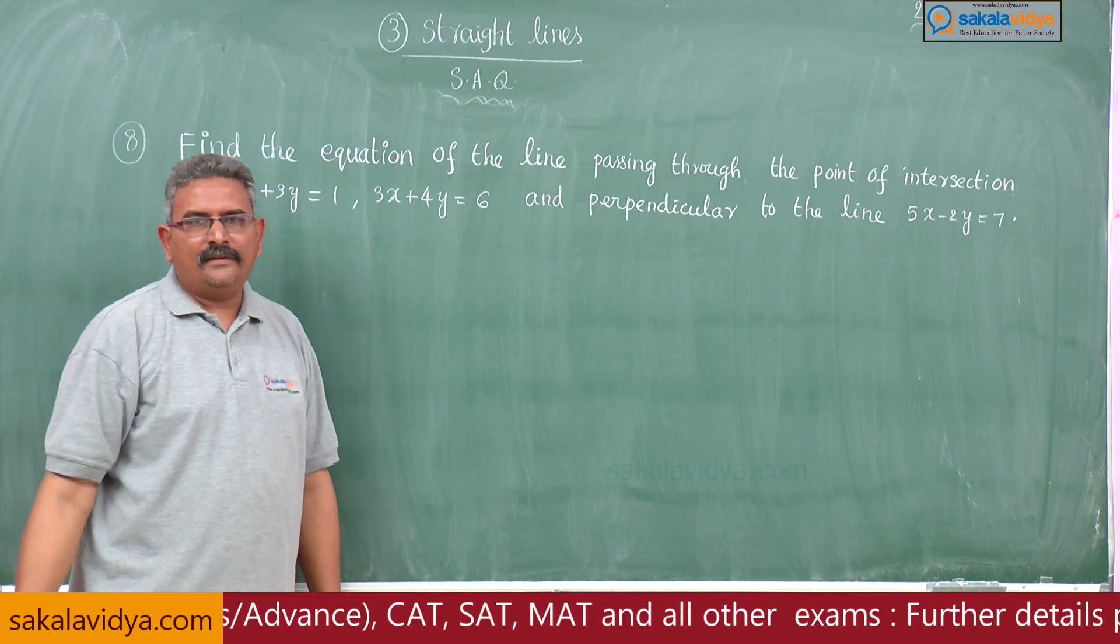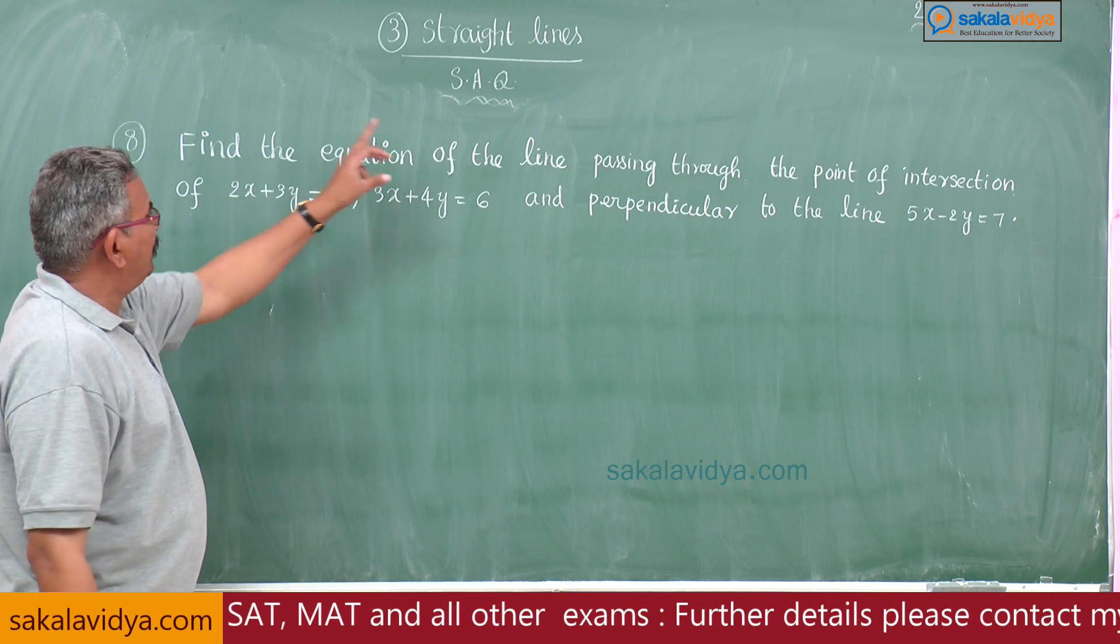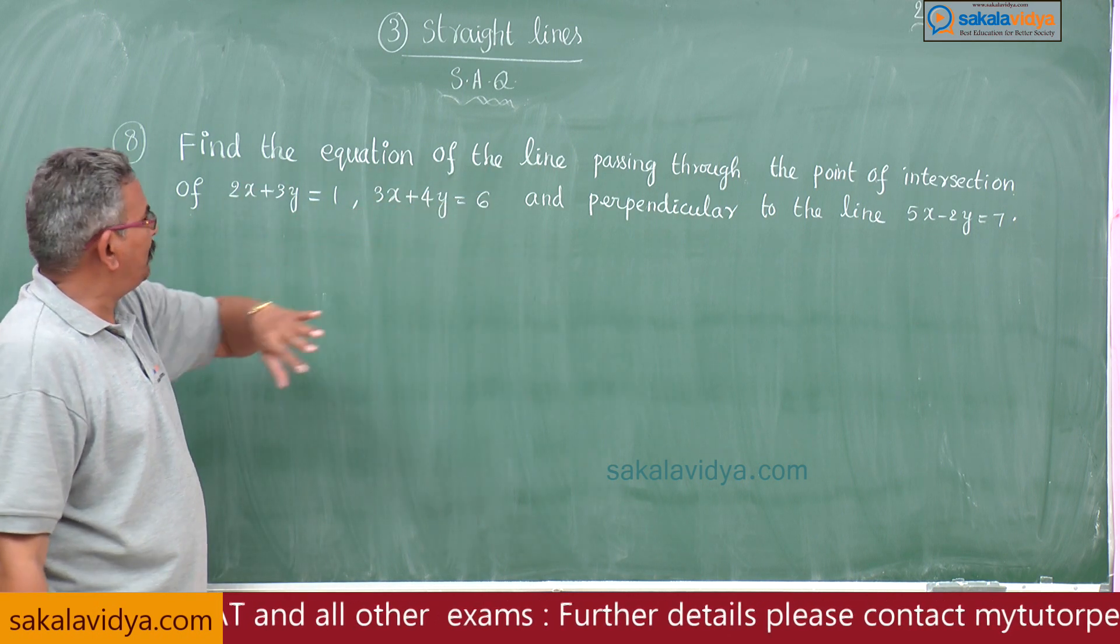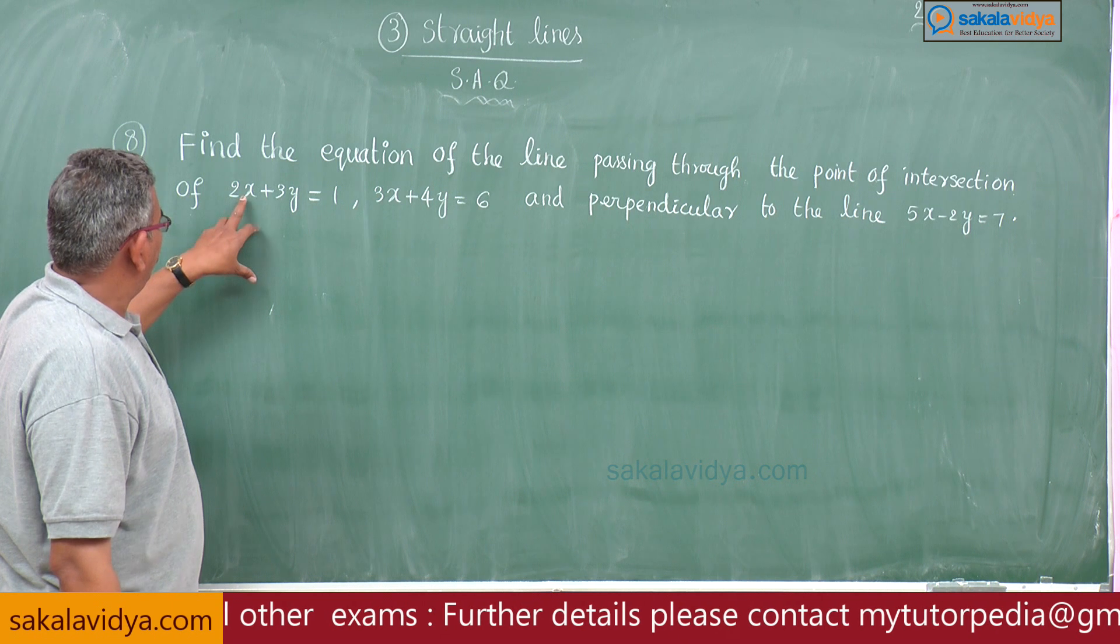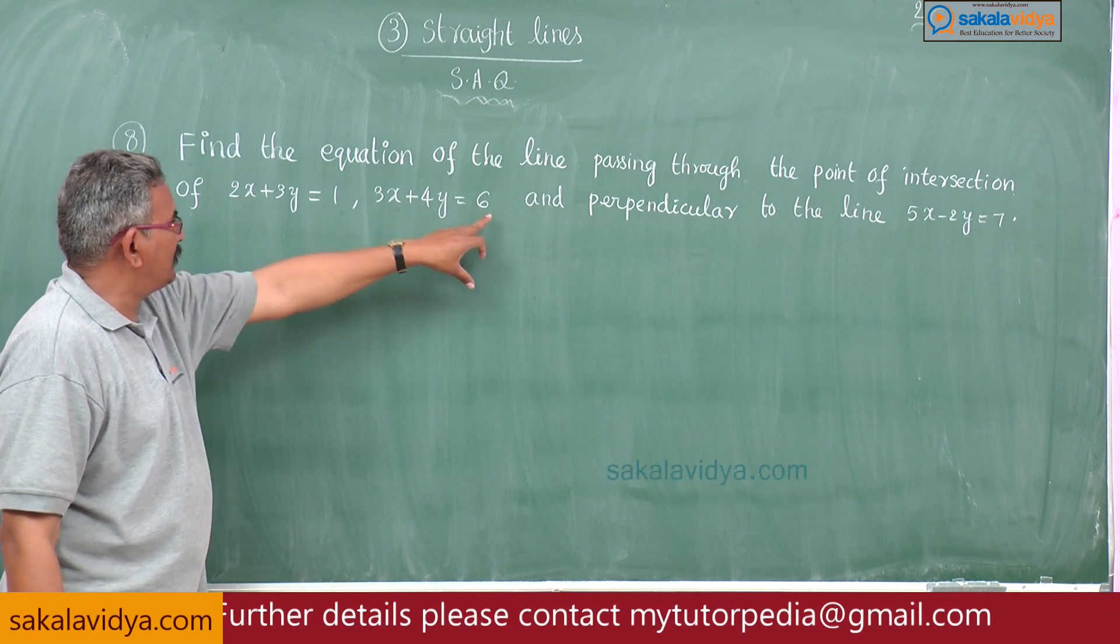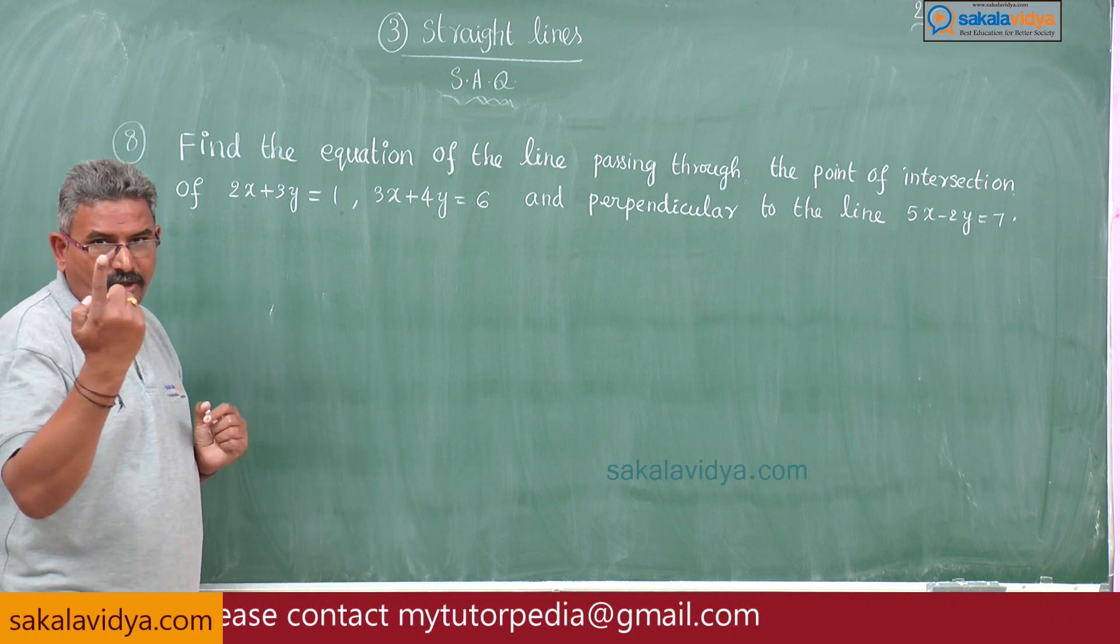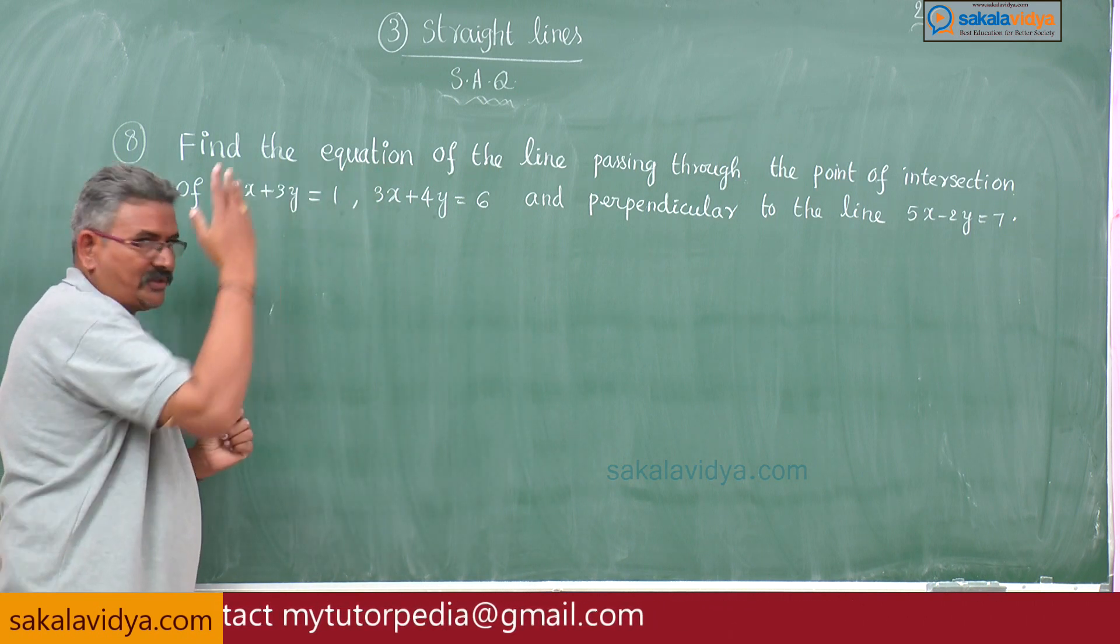This is a very important problem. Find the equation of the line passing through the point of intersection of 2x+3y=1 and 3x+4y=6. If you observe, we get one keyword: point of intersection.